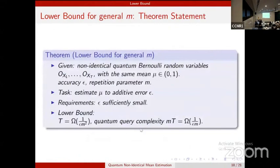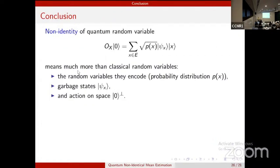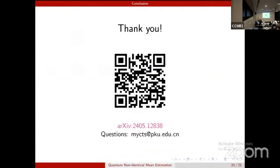In conclusion, in this paper we explored the non-identity of quantum random variables, identifying three different types. We showed how to overcome the non-identity in the garbage state in the upper bound to design efficient algorithms, and how to use the non-identity in the action on the complementary space to prove the lower bound. Thank you for your attention. If you are interested in more details, please scan the QR code, and feel free to contact me by email.